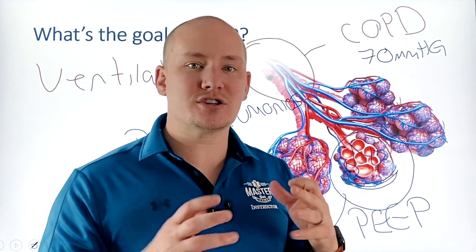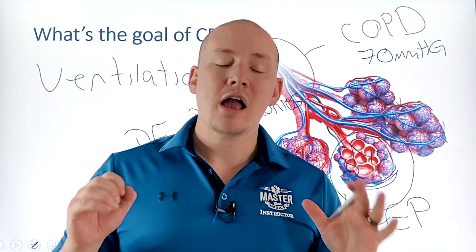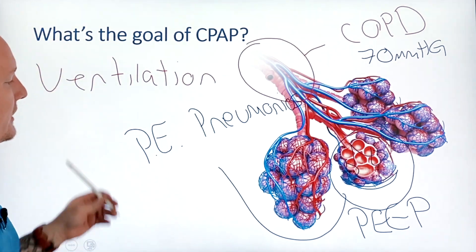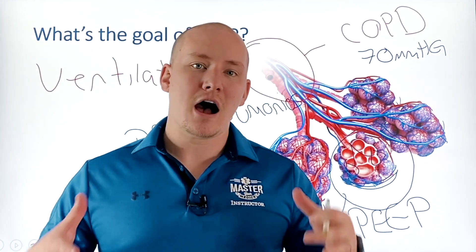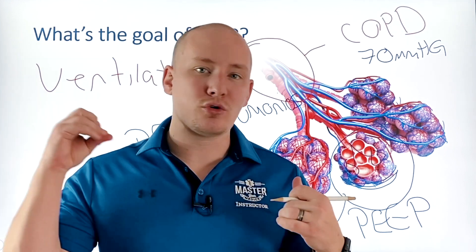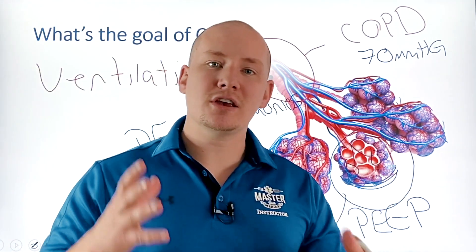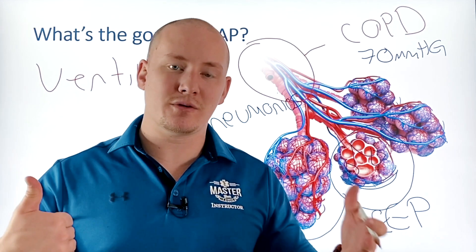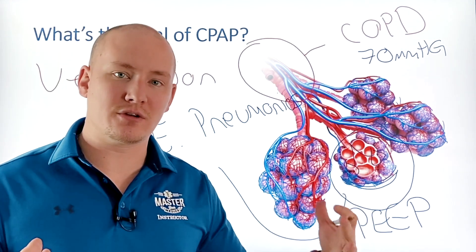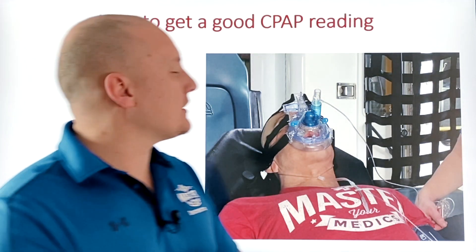Another tidbit to keep in mind: when you add CPAP to COPD patients, you'll tend to see the CO2 go lower and improvements in your patient quite rapidly — within two to three minutes. However, when it comes to pulmonary edema and pneumonias, we'll tend to see those improvements a lot slower, more around the 8 to 15 minute mark. So just because you put the CPAP mask on and don't see an immediate reaction, it could simply be the pathology you're dealing with.